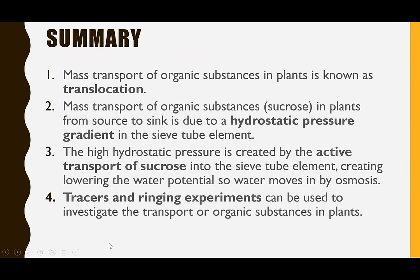In summary: mass transport of organic substances is known as translocation. Mass transport of substances such as sucrose or glucose in plants is from a source — the leaf — to the sink — the respiring cells — and that movement is due to changes in hydrostatic pressure. The high hydrostatic pressure at the source site is created by the active transport of sucrose into the sieve tube element, which lowers water potential so water moves in by osmosis. Tracers and ringing experiments can be used to investigate transport of organic substances, and in the new spec papers these have been common application questions.